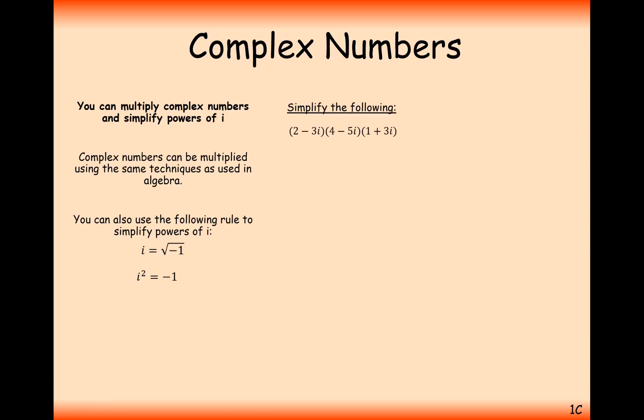Another thing that they could ask you to do is expand three brackets. Now how would you expand three brackets at GCSE? Well effectively you would just ignore maybe one of the brackets to start with, and then multiply it in later. So, expanding the two brackets first, you would get 8 minus 12i minus 10i plus 15i squared. Simplify i squared with minus 1, and you get minus 7 minus 22i.